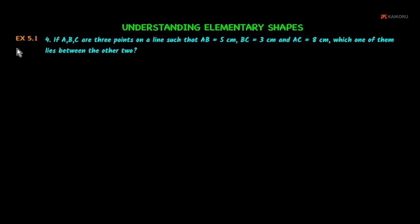Understanding elementary shapes. Exercise 5.1, problem number 4. If A, B, C are three points on a line such that AB is equal to 5 cm, BC is equal to 3 cm, and AC is equal to 8 cm, which one of them lies between the other two?